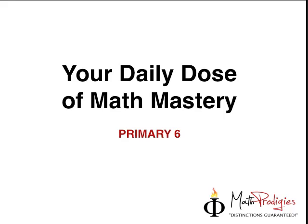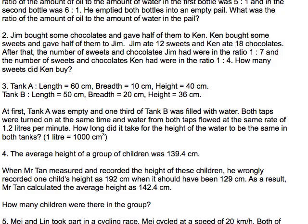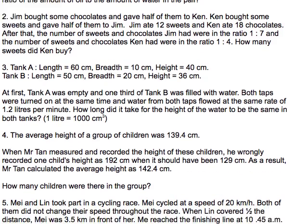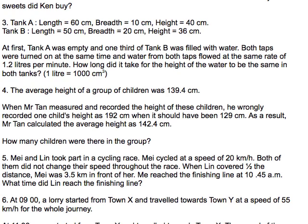So this question is a little tricky, it's a little confusing if you don't understand it, but let's take a look at this. It says the average height of a group of children was 139.4cm. So average means basically what? If you were to add up every single height of the children, and you were to divide it equally by the number of children, you will get 139.4.